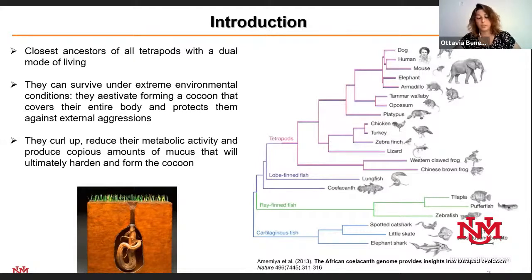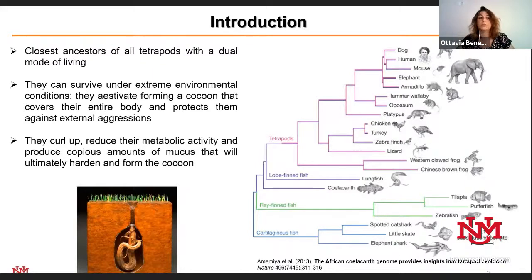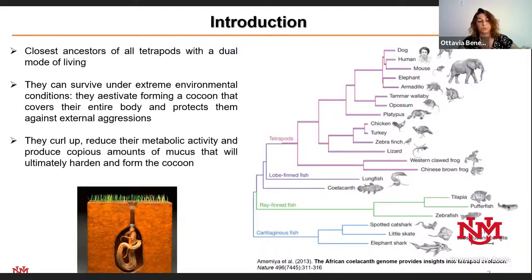The lungfish can live both in water and in the terrestrial environment. It can survive under extreme environmental conditions through a process called estivation, during which it forms a cocoon that covers the entire body and protects against external aggressions. When there is no water, the lungfish burrows into the mud, curls up, reduces its metabolic activity, and produces a copious amount of mucus that hardens to form the cocoon. In Africa, the lungfish can remain in this state for up to four years.